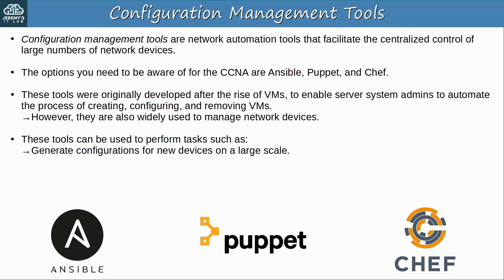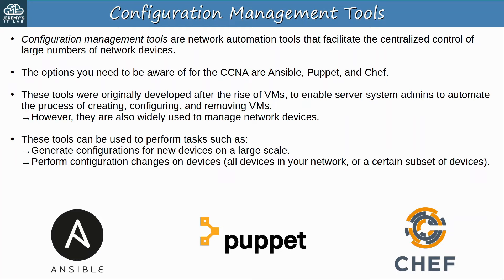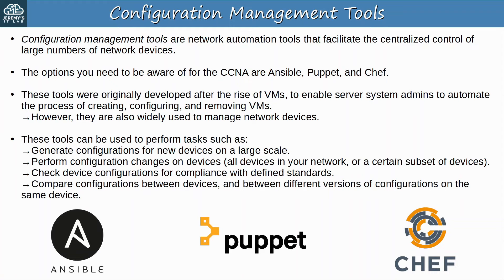These tools can be used to perform tasks such as generate configurations for new devices on a large scale. Using templates, it's very simple to generate a new configuration for a new device. They can be used to perform configuration changes on all devices in your network, a certain subset, or just one device. You tell Ansible, Puppet, or Chef which changes you want to make on which devices, and it does the rest. These tools can also check device configurations for compliance with defined standards — if a device's configuration doesn't match the standard, an alert can be sent, and you can fix it or automate the change. You can also compare configurations between devices and between different versions of configurations on the same device.